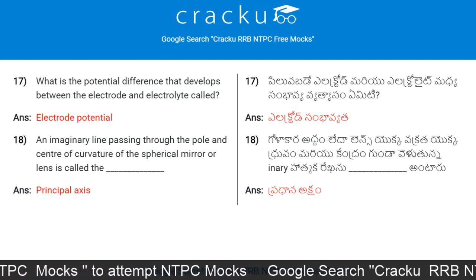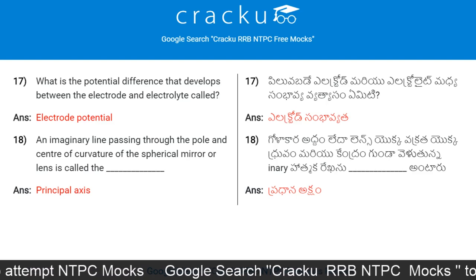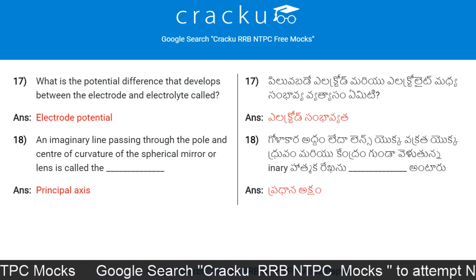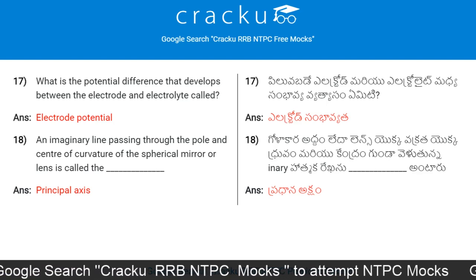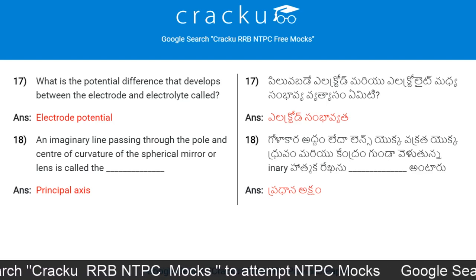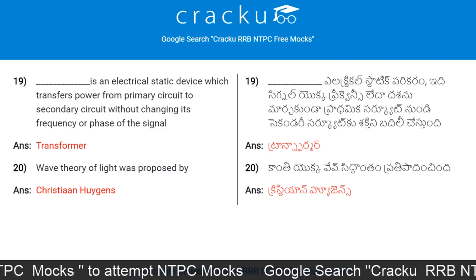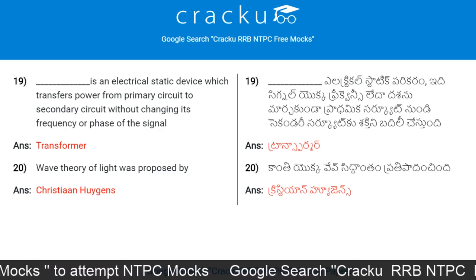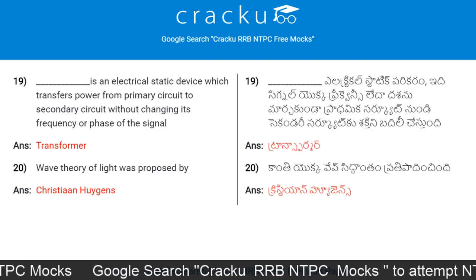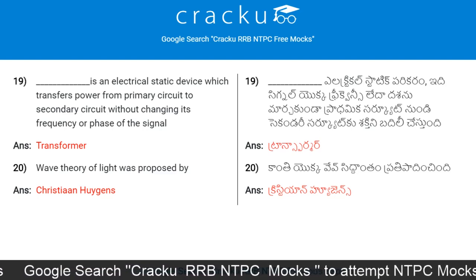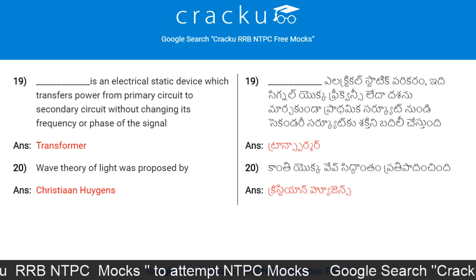An imaginary line passing through the pole and centre of curvature of a spherical mirror or lens is called the principal axis. A transformer is an electrical static device which transfers power from primary circuit to secondary circuit without changing its frequency or phase of the signal.